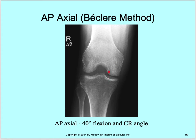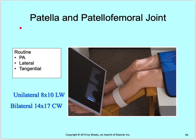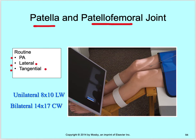The AP axial Beclere method result: there's your intercondylar fossa, with your articular surfaces and eminences visible. It's a 40 degree flexion with a central ray angle to create that 90 degree perpendicular to the lower leg. For patella and patellar-femoral joint spaces, the routine is a PA of your patella, a lateral of your patella, and a tangential of your patella — though a lot of times the PA is dropped and you end up doing just a lateral and a tangential.